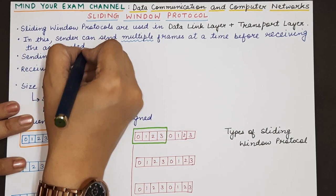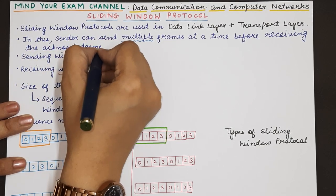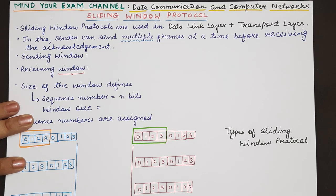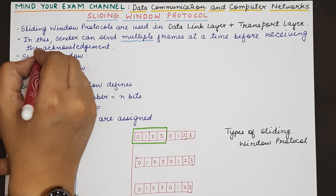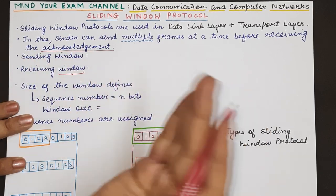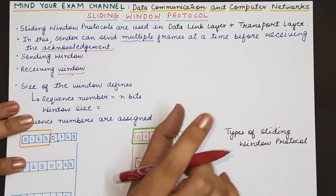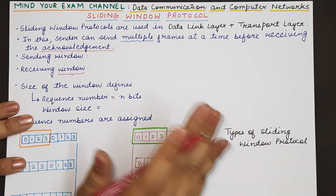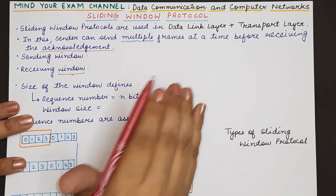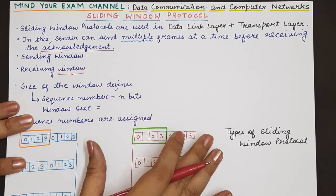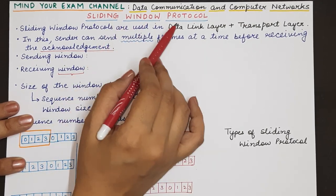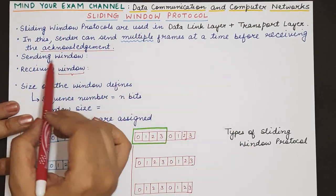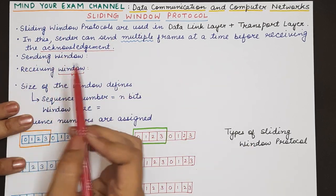If the sender decides to send frame number one, it can also send frame number two before getting the acknowledgement for frame number one. The receiver will then combine the acknowledgements for frame zero and frame one, and the combined acknowledgement will be sent to the sender. In this protocol, each sender and receiver both maintain their own windows.